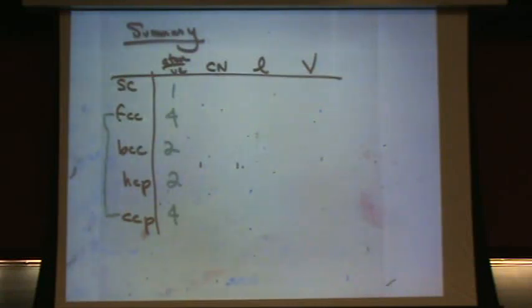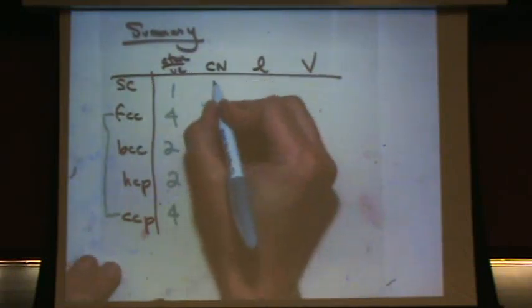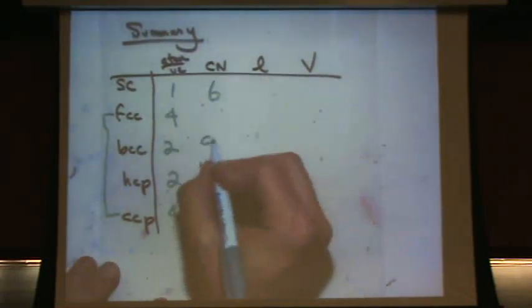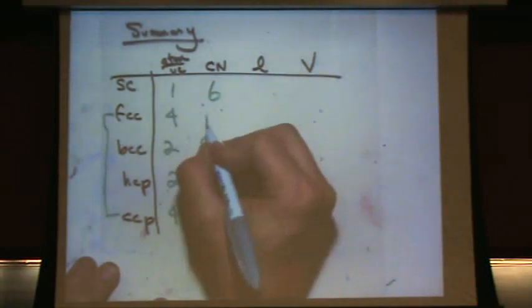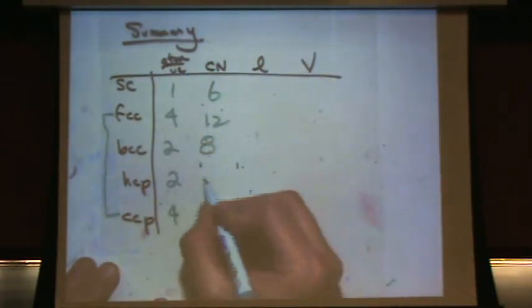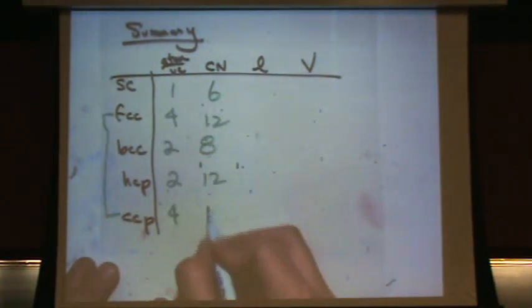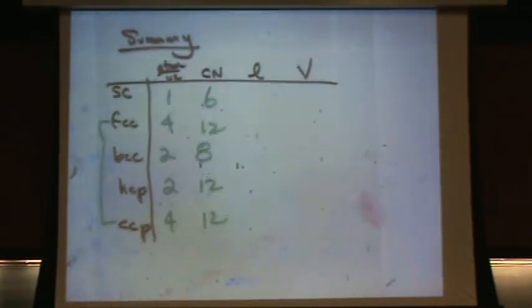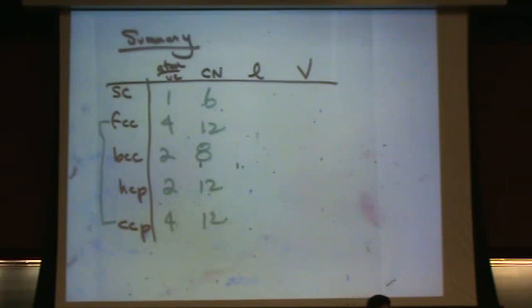Coordination number — let's do those. SC is 6, BCC is 8, and FCC, CCP, and HCP are all 12. Can you have a coordination number larger than 12? No, that's not possible.